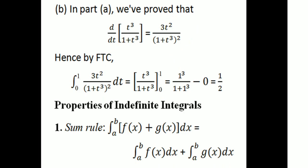We have proved that d by dt of t cubed divided by (1 plus t cubed) equals 3t squared divided by (1 plus t cubed) squared. Hence, by the Fundamental Theorem of Calculus, the integral from 0 to 1 of 3t squared divided by (1 plus t cubed) squared dt equals t cubed divided by (1 plus t cubed) evaluated from 0 to 1, which gives 1 cubed divided by (1 plus 1 cubed) minus 0, equal to 1 over 2.